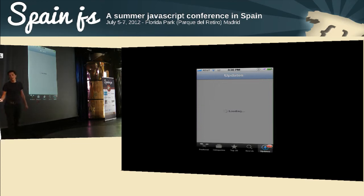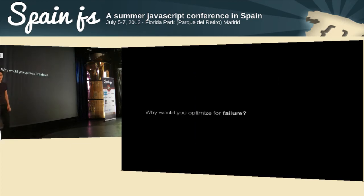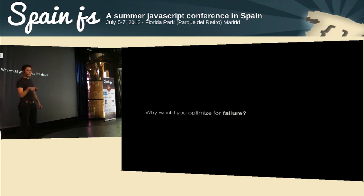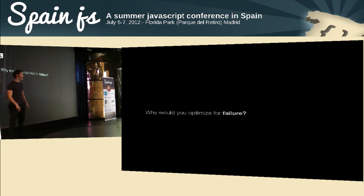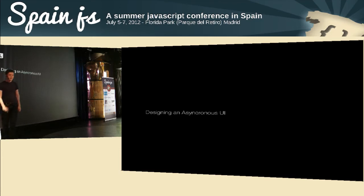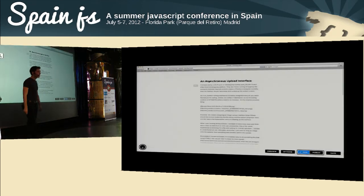My question is: why would you optimize for failure? 99% of those network requests are going to go through fine. Why not just assume they're going to go through fine? If they do fail there are various things you can do, but you should optimize for the most common case.